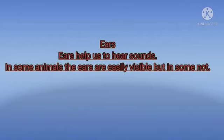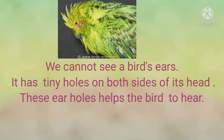Ears help us to hear sound. In some animals the ears can be seen, but in some animals we cannot see the ears. Let us take the example of a bird. Have you seen a bird's ears? Look at the image of a bird — we cannot see a bird's ear. It has tiny holes on both sides of its head. These ear holes help the bird to hear.